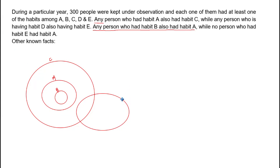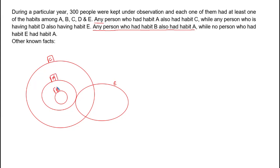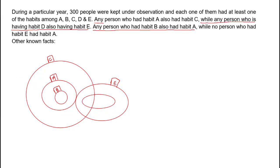The circle of habit E goes here. The one remaining habit is D. The statement says any person who had habit D also had habit E — meaning all people having habit D also have habit E. So the circle of habit D is drawn inside the circle of habit E. This completes the Venn diagram.